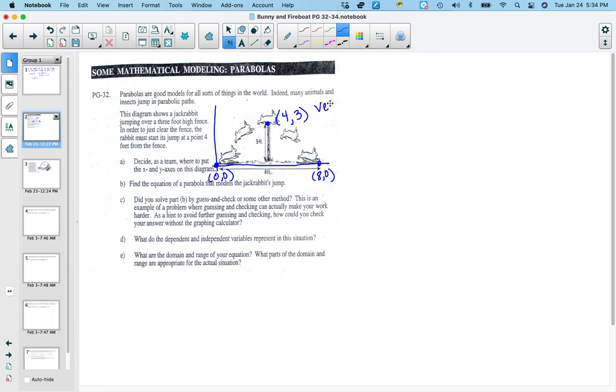But find the equation of a parabola that models the jackrabbits jump. So notice that this is the vertex. And if, by knowing the vertex, so we have y equals a x minus h quantity squared plus k. So I'm going to use the vertex form of the equation. So we can actually plug this in for h and k. And then we can either plug in a 0, 0 for x and y or an 8, 0.